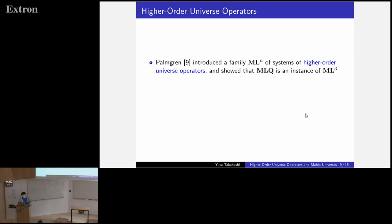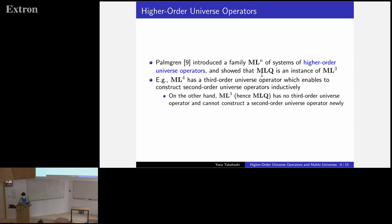Finally, let me explain another, Palmgren's generalization of MLQ. And I want to compare it with Mahlo universes. Palmgren introduced a family MLN or system of higher order universe operators and showed that MLQ is an instance of ML3. So, what is MLN? For example, ML4 has a third order universe operator, which enables to construct second order universe operators inductively. On the other hand, ML3, hence MLQ, has no third order universe operator and cannot construct a second order universe operator newly.